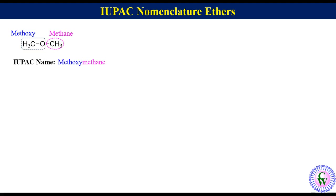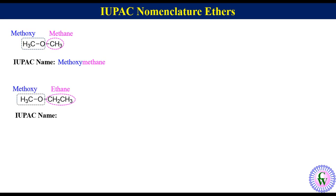The next example is CH3OCH2CH3. Here the two groups attached to the oxygen atom have different numbers of carbons. So the two-carbon group having the greater number of carbon atoms will be the parent chain called ethane, while the CH3 will be the part of the alkoxy group called methoxy. Thus the IUPAC name of this molecule will be methoxyethane.